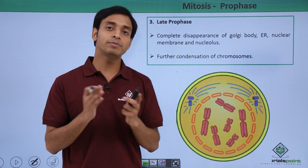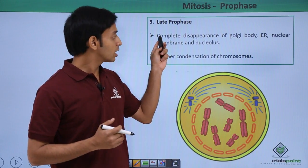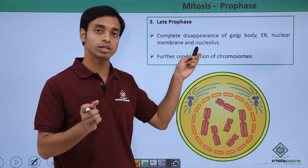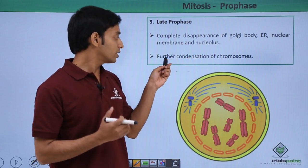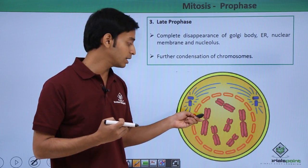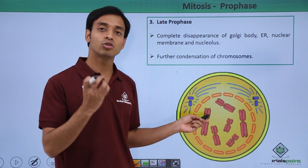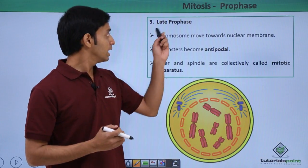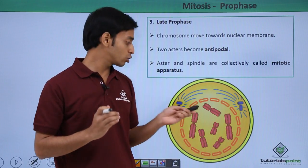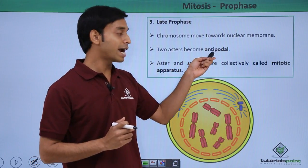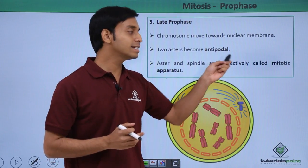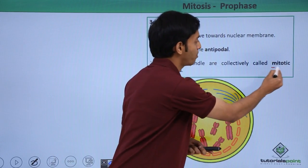After the mid comes the late prophase. Here there is complete disappearance of cell organelles like Golgi bodies, endoplasmic reticulum, and very importantly the nuclear membrane and nucleus. Further condensation of the chromosomes occurs, and the chromosome-like structures can now be clearly observed, whereas before we were seeing only a network-like structure. The chromosomes move towards where the nuclear membrane was. The two asters become antipodal, moving towards opposite poles, and collectively the asters and spindles form a structure known as the mitotic apparatus.